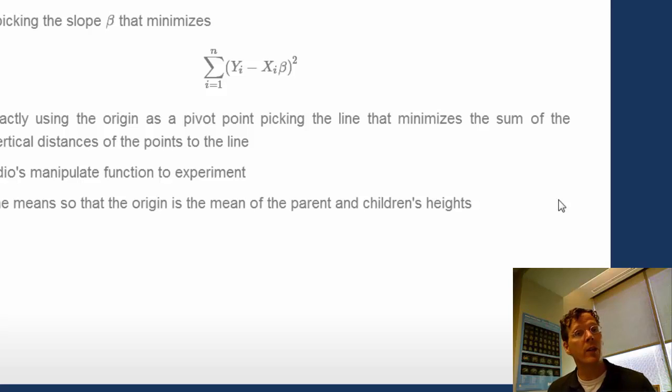Now, regression to the origin is useful for explaining things because we only have one parameter, the slope, and we don't have two parameters, the slope and the intercept. But it's generally bad practice to force regression lines through the point. So an easy way around this is to subtract the mean from the parent's height and the mean from the child's height so that the point is right in the middle of the data.